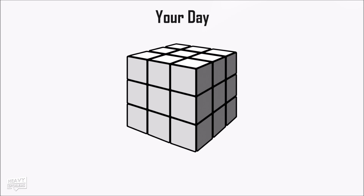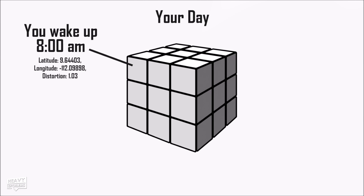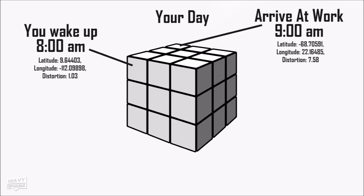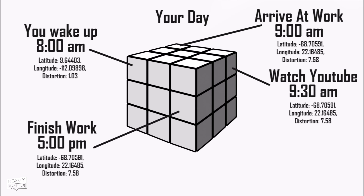Imagine this is your day mapped out in the form of a cube. At 8am you wake up, so we would mark down this time on the cube, and because we know the location of your home we can mark down the exact coordinates, giving us a precise moment of space-time once we also factor in today's date. Now imagine each one of these cubes within the cube is a point in your day — because we have the location and time you are at a given location, we can map out precise coordinates.